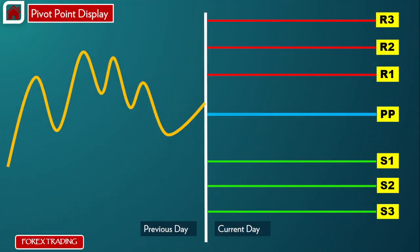This is your previous day with this price movement, and when you apply PP, this is the pivot point line. These are your three pivot point resistance levels, and below these are your pivot point support levels. Remember, these resistance and support levels are pivot point indicator-specific. The other original resistance and support levels are apart from it — you don't have to ignore them.